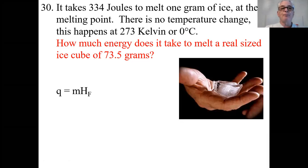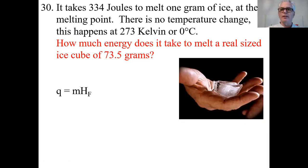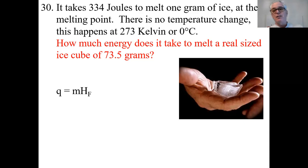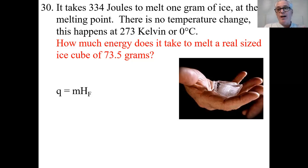Question 30. It takes 334 joules to melt one gram of ice at the melting point. That's called the heat of fusion. It's a constant for water — that's in table B. There's no temperature change. It happens at 273 Kelvin, or at zero degrees centigrade.